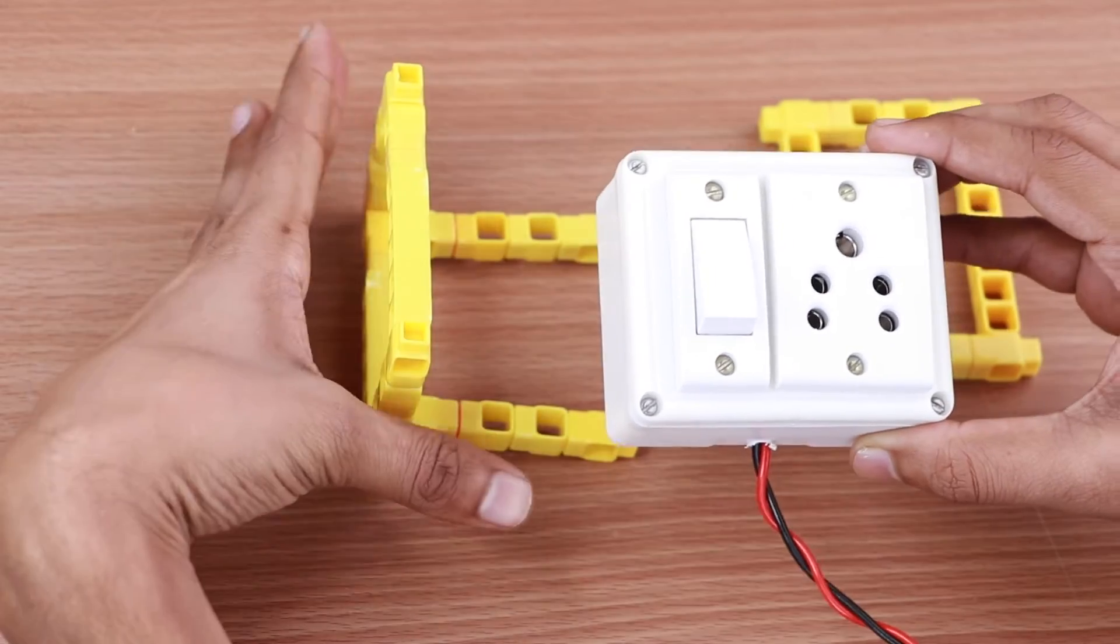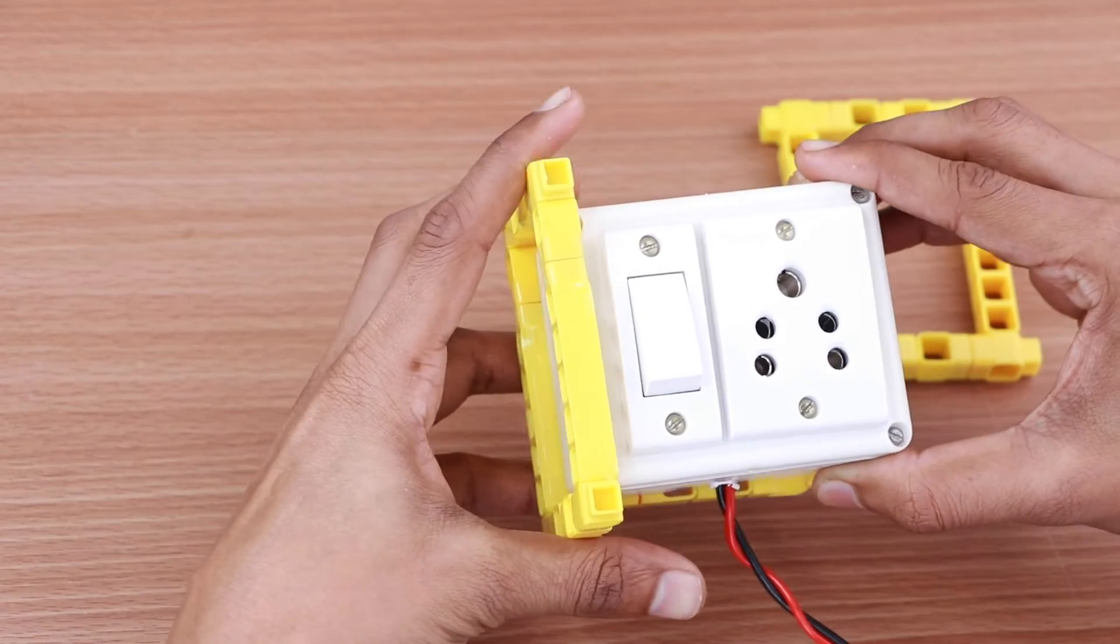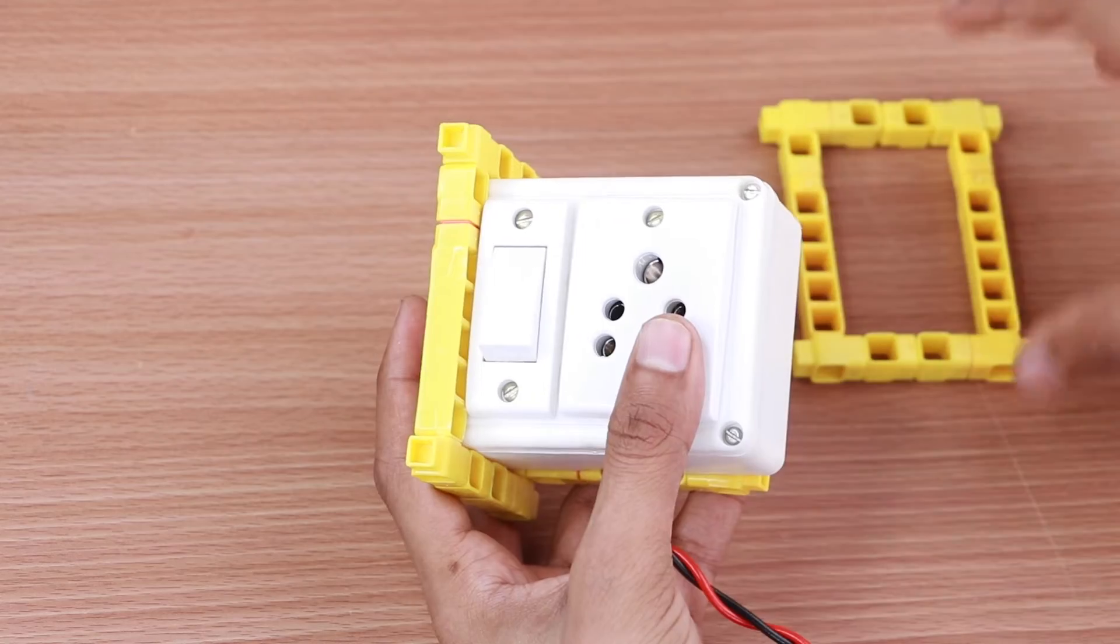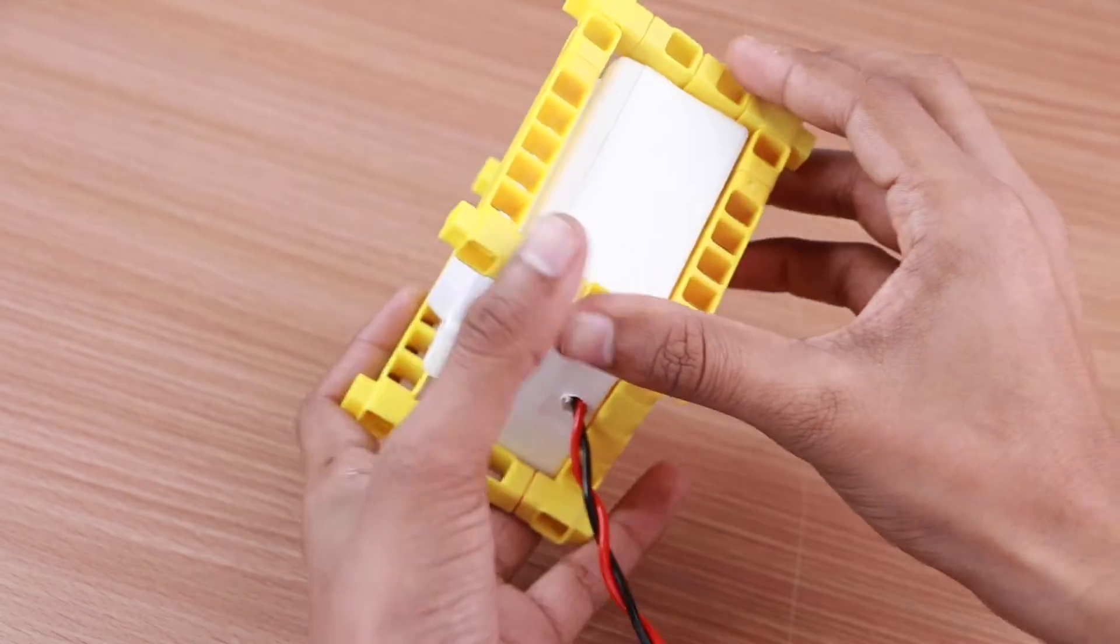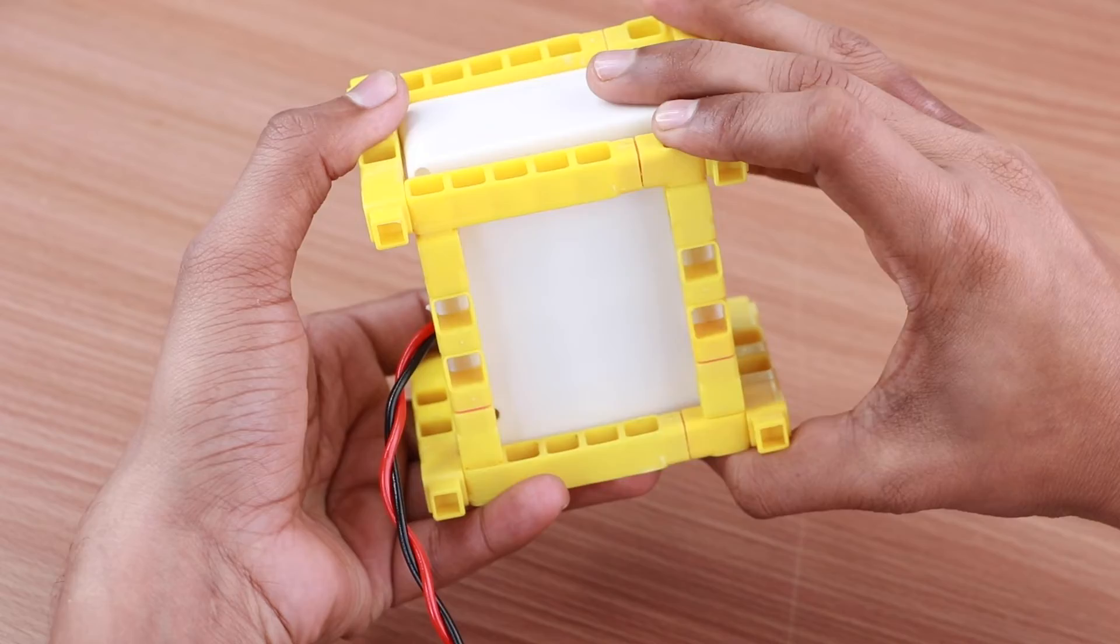Grab the switchboard. Attach the rectangle with connectors sideways as shown. Next, join the other rectangle via the connectors on the switchboard.